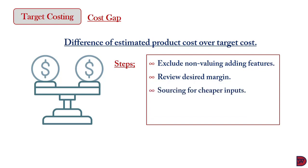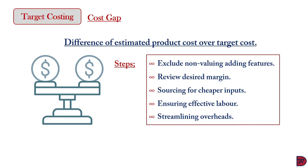Thirdly, relatively cheaper materials can be switched to, provided the switch does not threaten the quality of the product. Labor can also be trained to be more efficient, reducing idle hours or waste. Labor with lesser skill and lower wages can be employed, but the change in skill level must not be too wide, as this could result in increased wastage and machine breakdowns, which would widen the gap further.